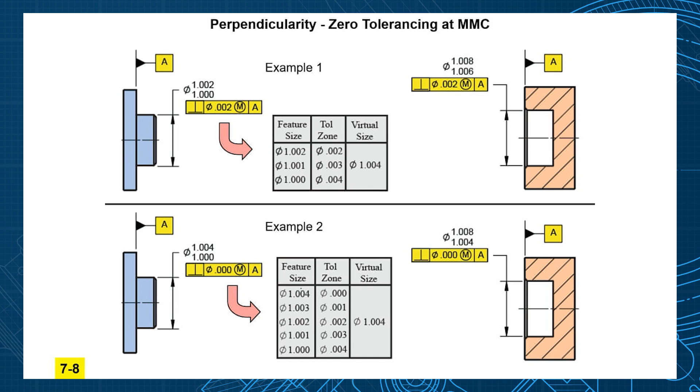Now let's look at our example two, where now you're taking the one inch four as your MMC size, and give it a tolerance zone of zero. That gives you a one inch four virtual, this plus this, one inch four virtual, one inch four virtual. So same virtual condition.